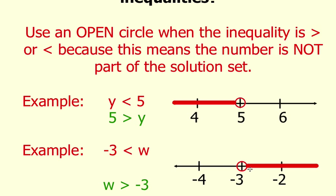You should know that all the numbers to the right of negative 3 on a number line are greater than negative 3. And therefore, the right side right here is shaded.